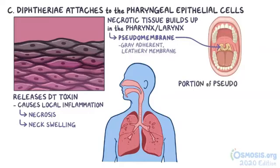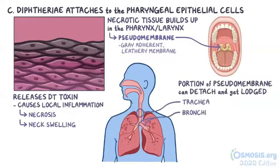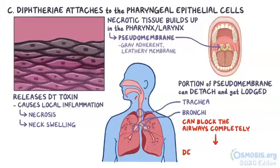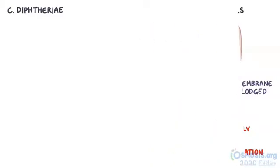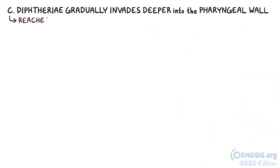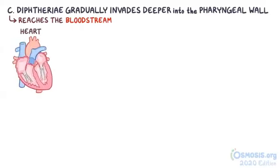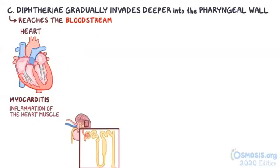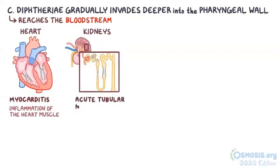In some cases, a portion of the pseudomembrane can detach and get lodged into the trachea or bronchi, and when it's big enough, it can block the airways completely, causing death by asphyxiation. If left untreated, the bacteria gradually invades deeper into the pharyngeal wall until it reaches the bloodstream, from where it can move to distant organs like the heart, causing myocarditis or inflammation of the heart muscle, or the kidneys, causing acute tubular necrosis, or destruction to the renal tubules.